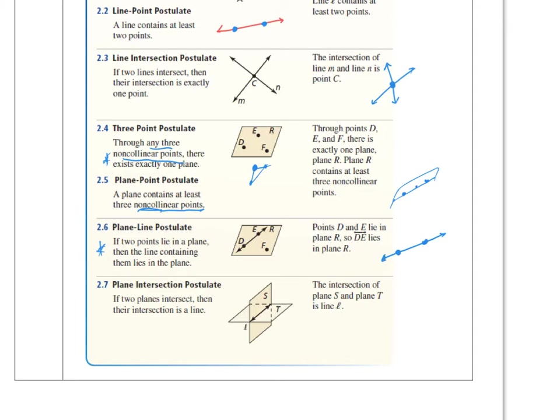Next is the plane intersection postulate. As long as you get two planes that intersect, you will get a line that's formed. If the two planes intersect, then their intersection is a line. Think of it as a wall in a room. You've got the floor, and then you've got the wall that comes up. This intersection right here is going to be a line.